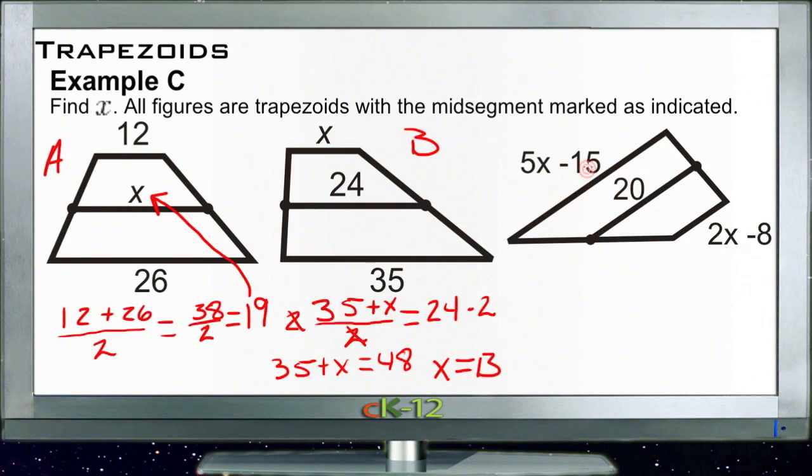Alright, and for Example C, we know that 20 is the average of these other two bases, so that tells us that 20 is equal to (5x - 15) plus (2x - 8) all over 2.